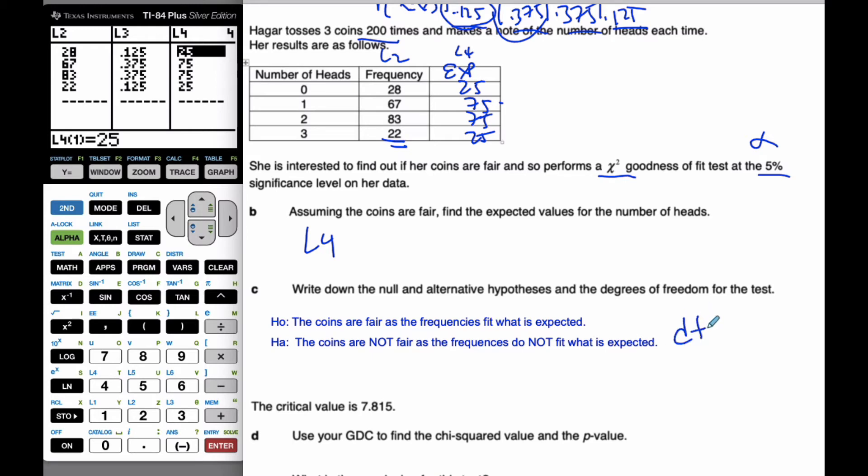And the degrees of freedom in this case is going to be categories, which there are four categories, subtract one. So, that's going to be degrees of freedom of three.